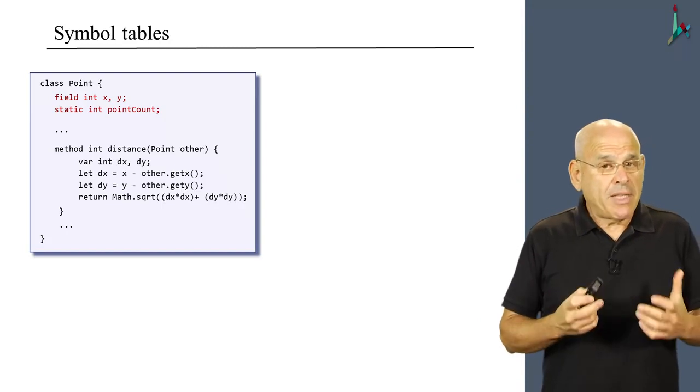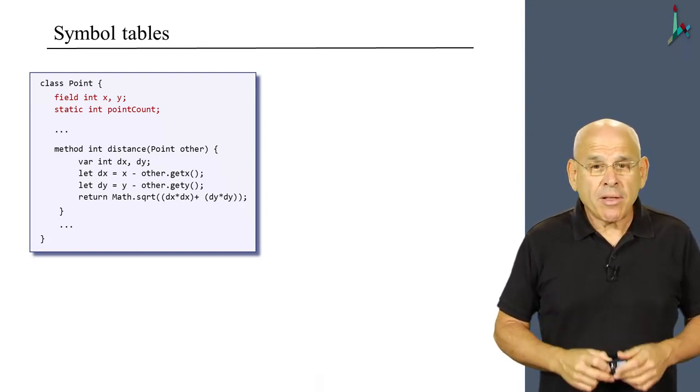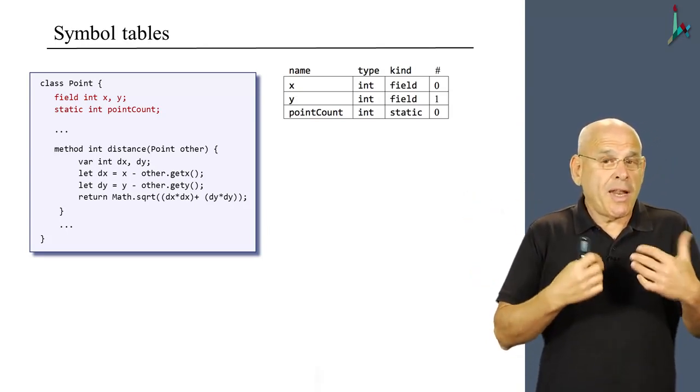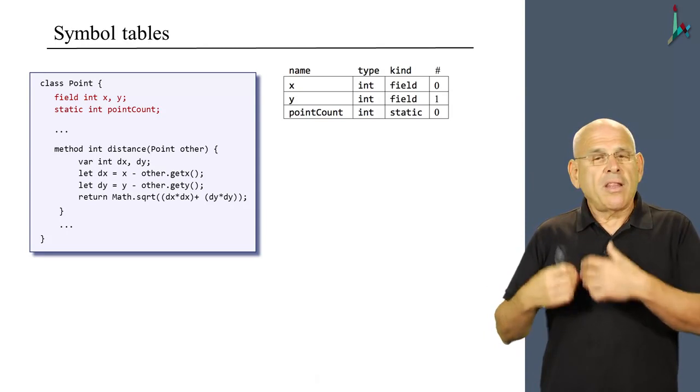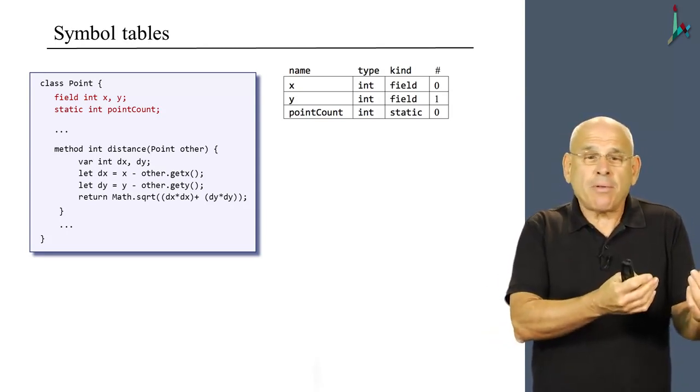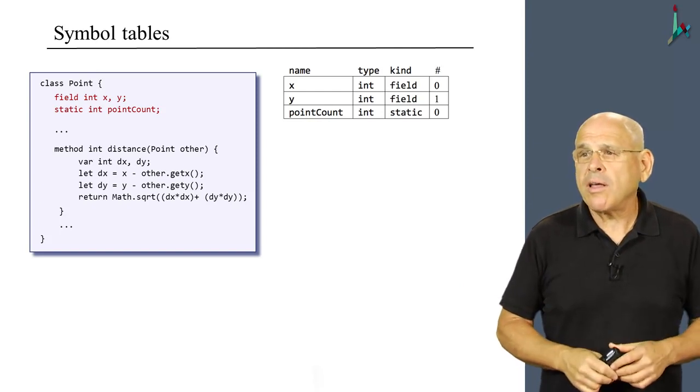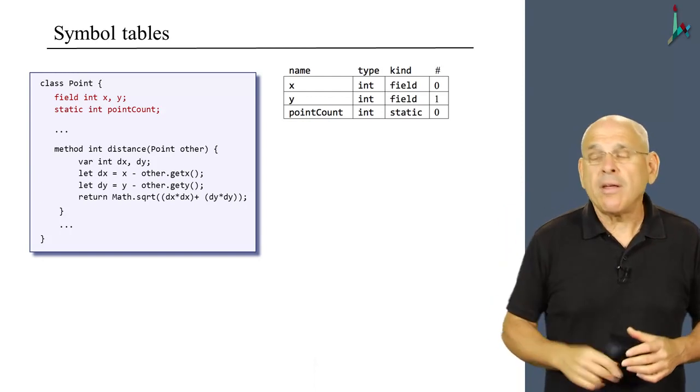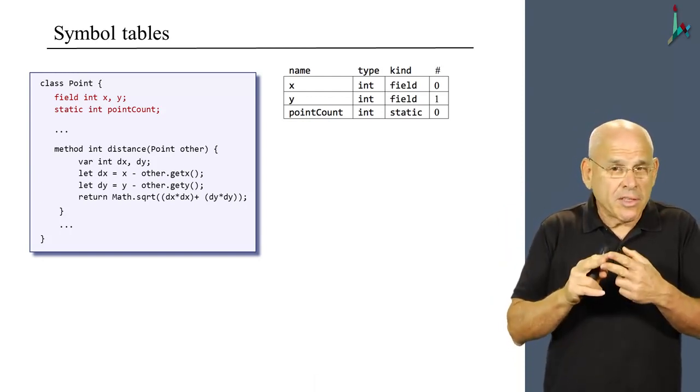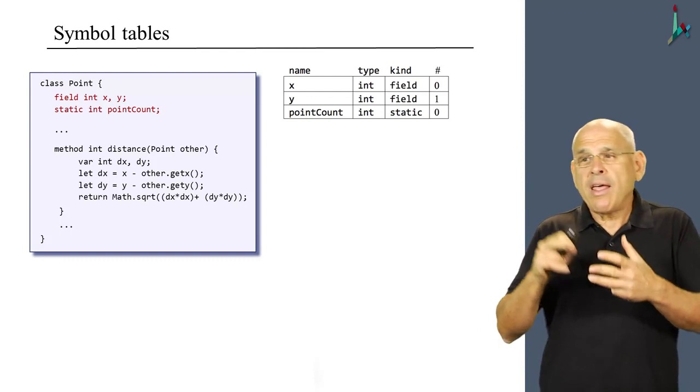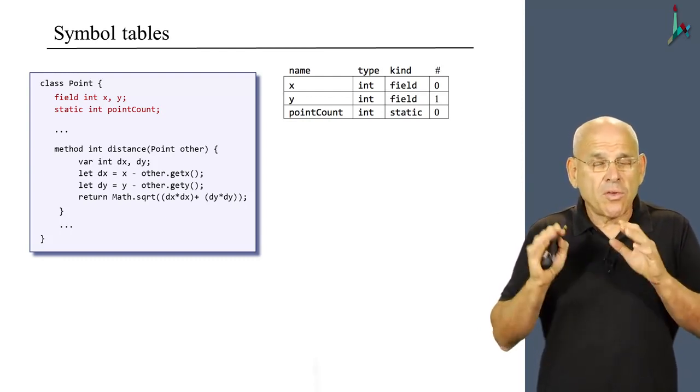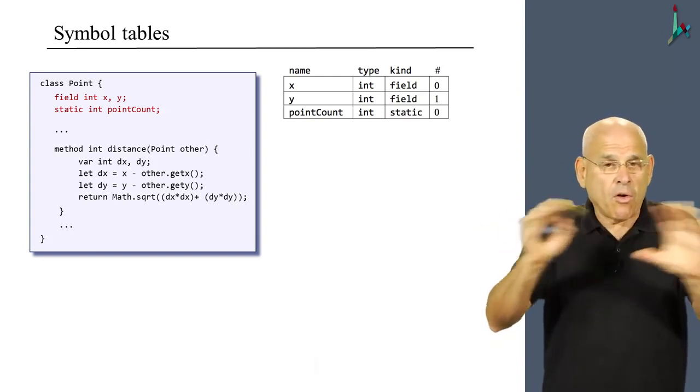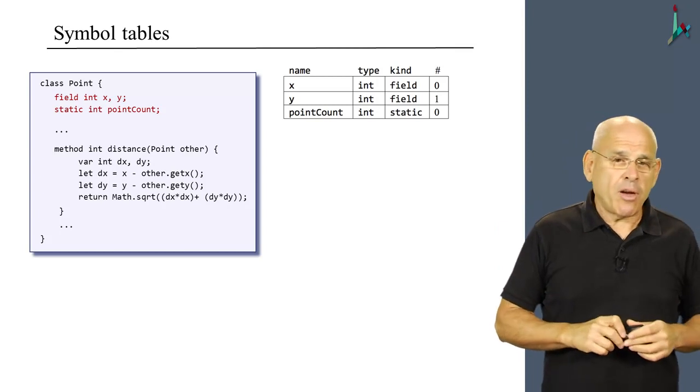And in order to represent these variables in a symbol table, we'll construct a table that looks like this. It has several columns. First column records the name of each variable. The next one is the type of the variable, which in this example happens to be integer all along. Then we have the different kinds of the variables and we find a running number that indicates that in this example we have two fields, field 0 and field 1 and one static, static 0. So this is the symbol table which is associated with the Point class.